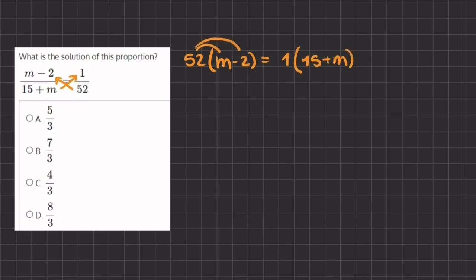Now we can distribute these numbers into the parentheses. We have 52 times m, which gives us 52m. 52 times negative 2 gives us negative 104. This equals 1 times 15, which gives us 15, plus 1 times m, which gives us m.